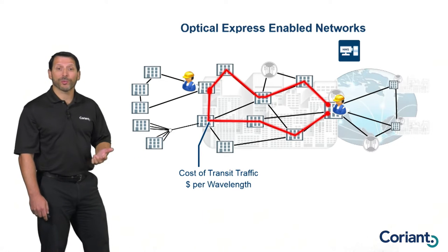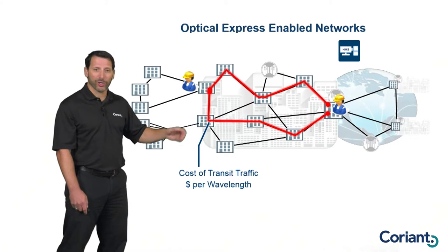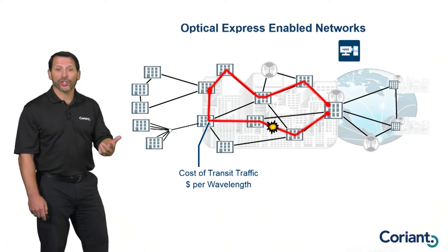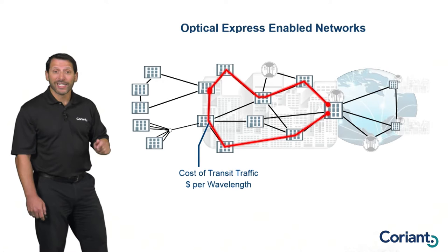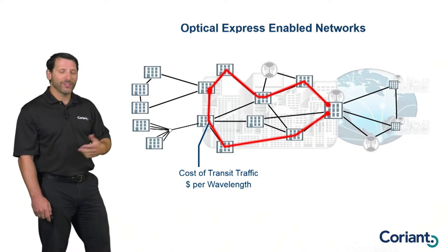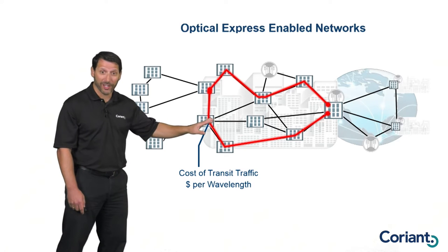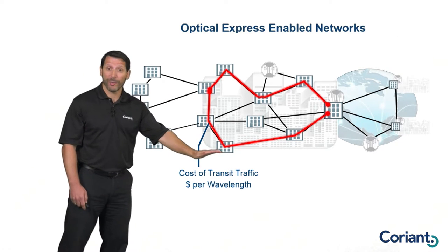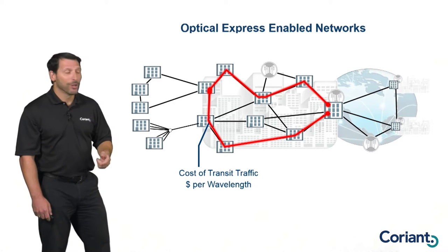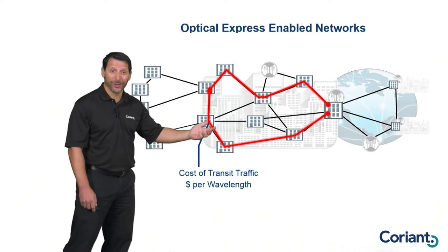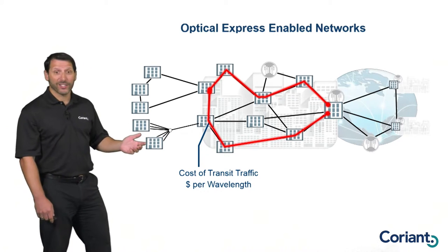Optical Express also provides another benefit to network reliability and resiliency. Because I can steer the direction that signals take through the network remotely, if I have a network failure, I can restore service around that failure by simply sending commands from the management system to steer that wavelength down an alternative path — without sending a single person to any location. Beyond manual restoration, things like control plane or SDN can automatically detect the failure, automatically calculate a new route, and automatically provision the service down that new path — all without any human interaction. In many cases that can be done in less than 50 milliseconds.